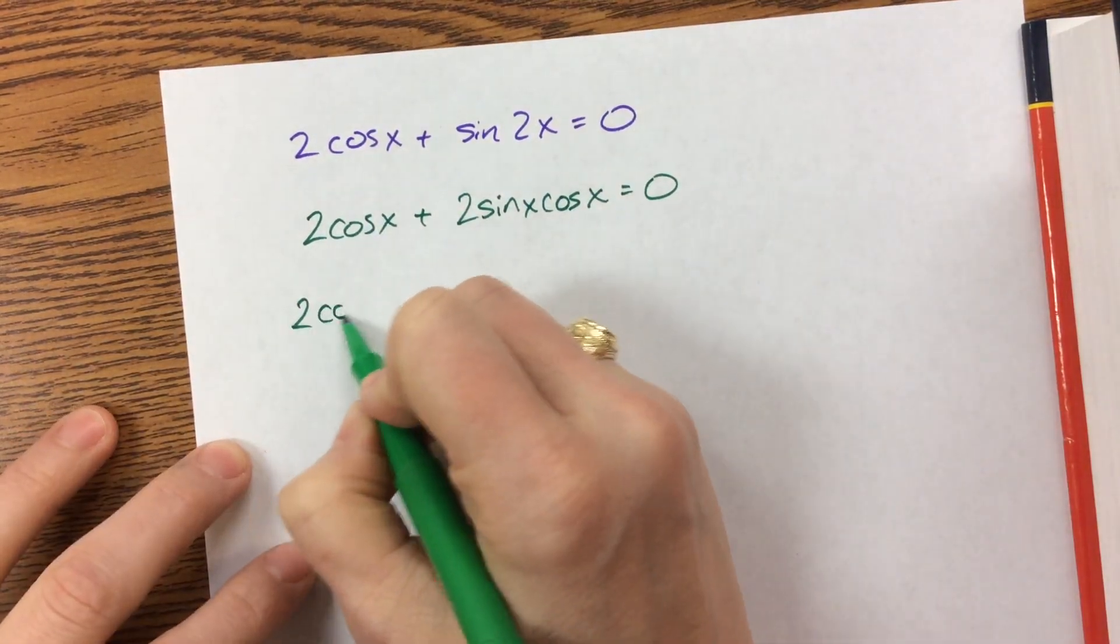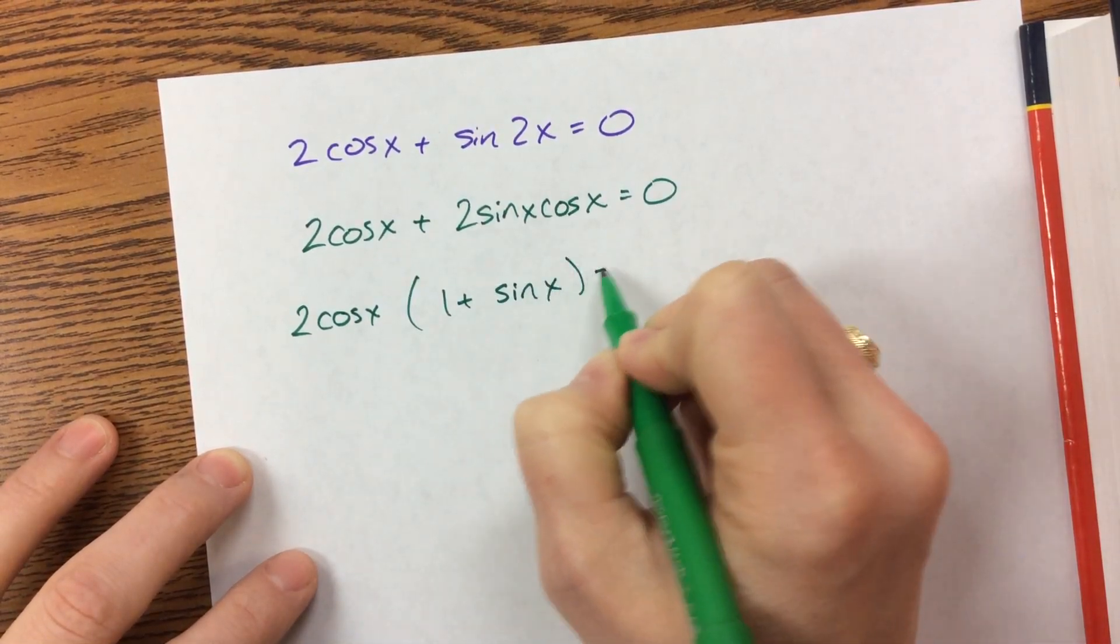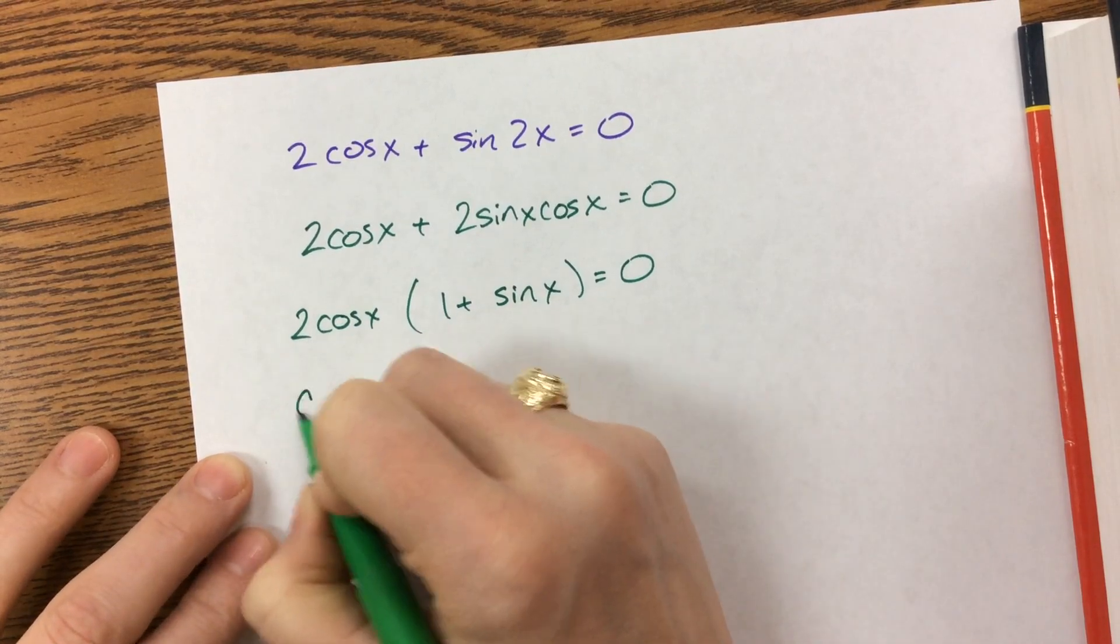Because now from here, I can factor out a 2 cosine. I have 1 plus sine. Okay.